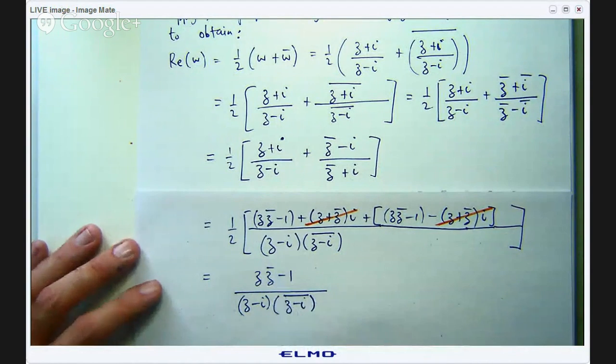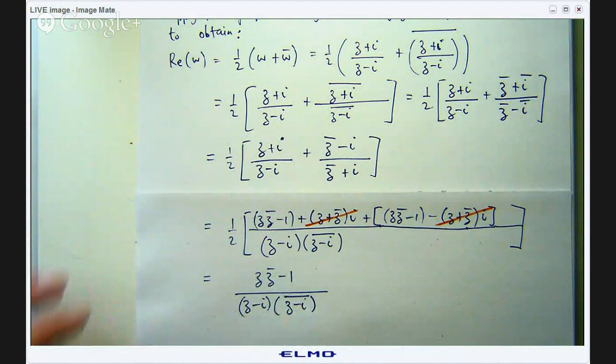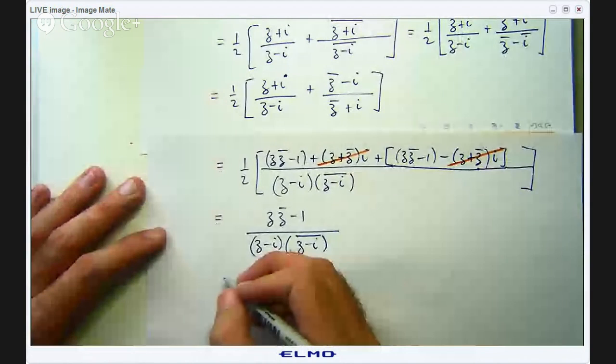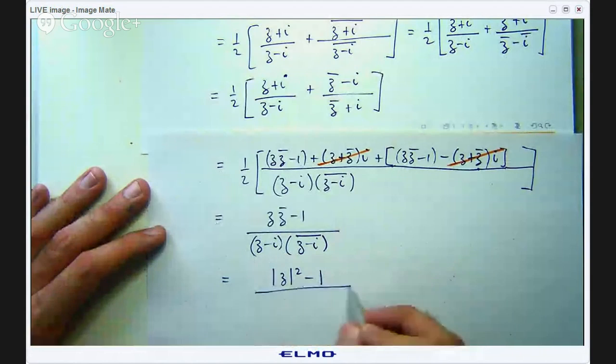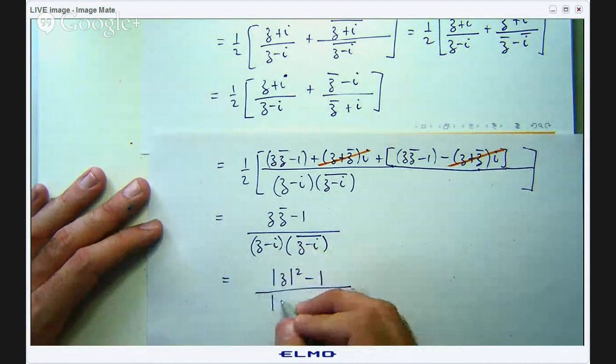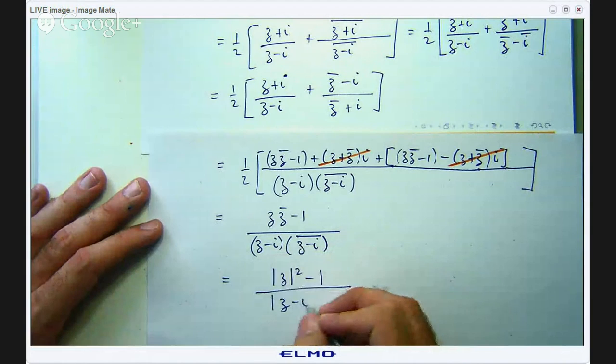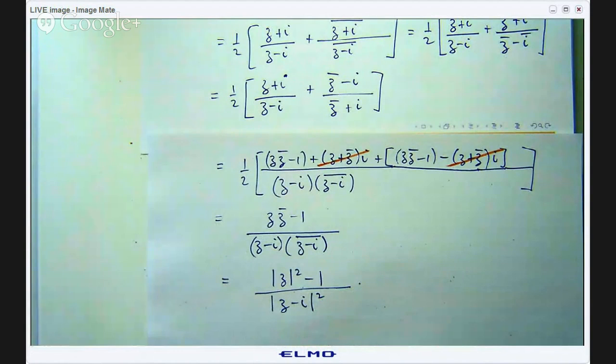And now I can use the properties, the relationship between a complex number, its conjugate and the modulus that I showed you. So this now is going to be the square of the modulus of z and the bottom is going to be this. Okay so now what?